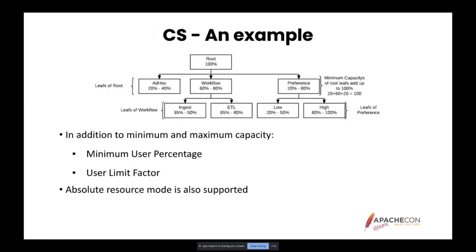Let's look at the following queue setup. Just like in FAIR Scheduler, all queues are children of root, and applications can only be submitted to leaf queues. Capacity is assigned as a minimum and maximum percentage of the parent. For example, queue 'low' has 20% minimum capacity, meaning it will get at least 20% of its parent's capacity — effectively at least 20% of the entire cluster's capacity. On each level, every child's minimum resources should add up to 100%.